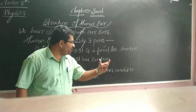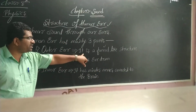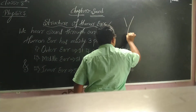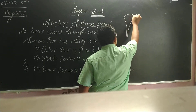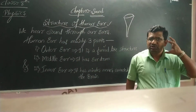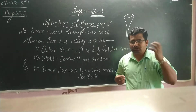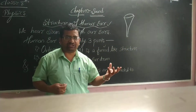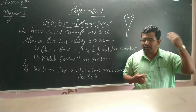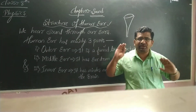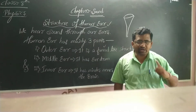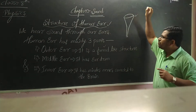The outer ear has a funnel-like structure. This funnel-like shape enables us to grasp or absorb sound waves from all directions — from the back side, front side, left side, and right side. So the funnel-like structure of the outer ear makes it possible to collect sound waves from all directions.